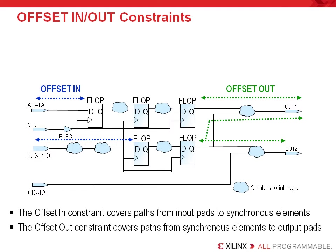The number of paths will vary greatly by the behavior of your design. You should also note that even after specifying an offset in, an offset out, and a period constraint, it is still possible to have unconstrained delay paths, such as purely combinatorial paths as shown in this example. Remember that the offset in and out constraints do not cover paths between synchronous elements, and they do not cover paths that are purely combinatorial.